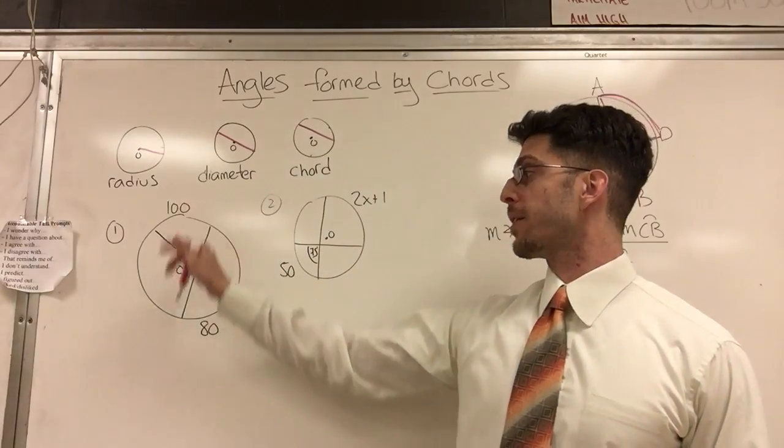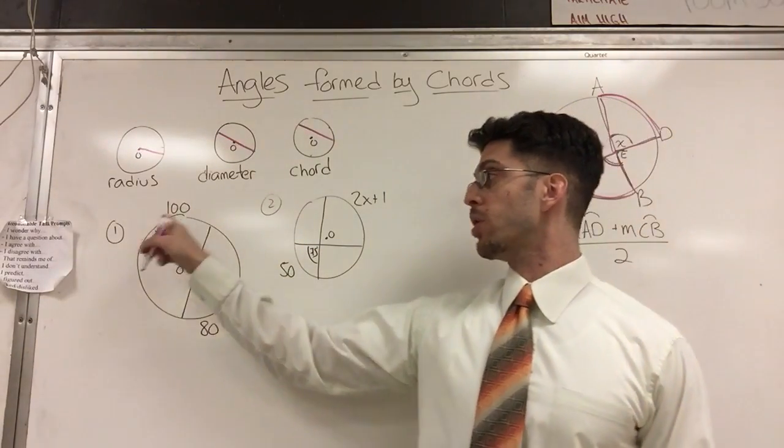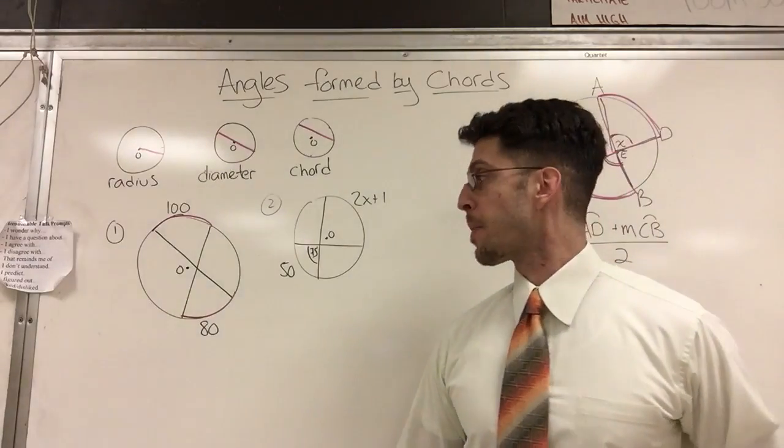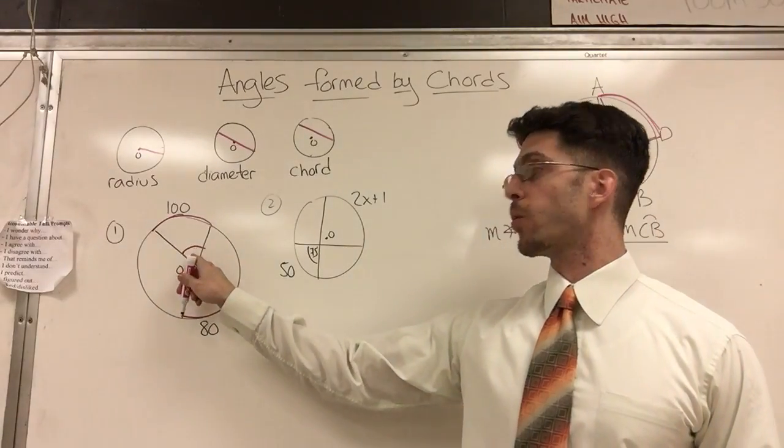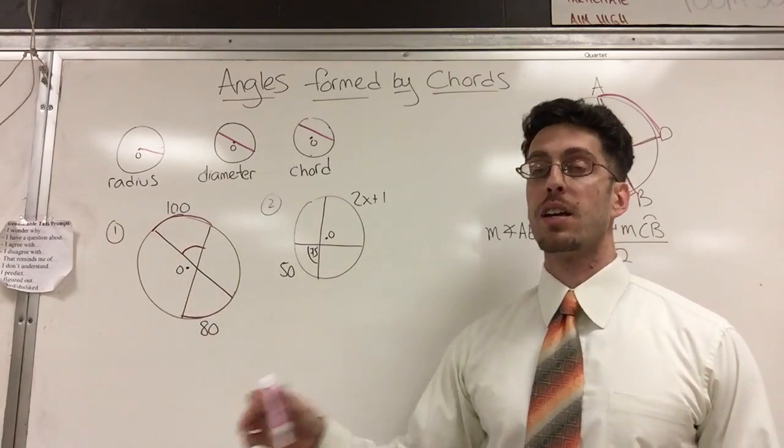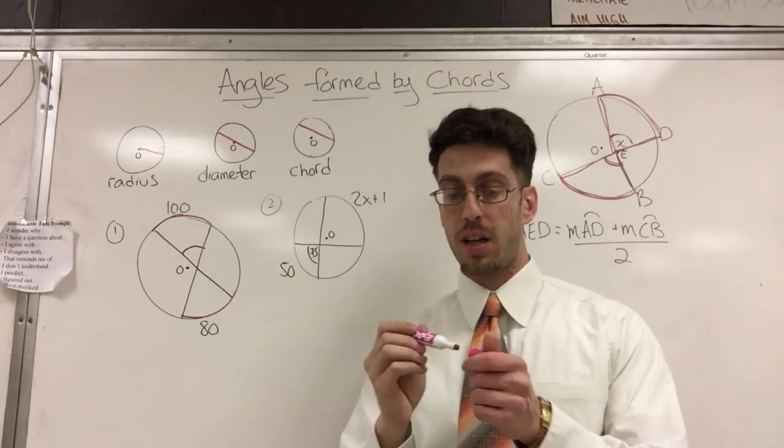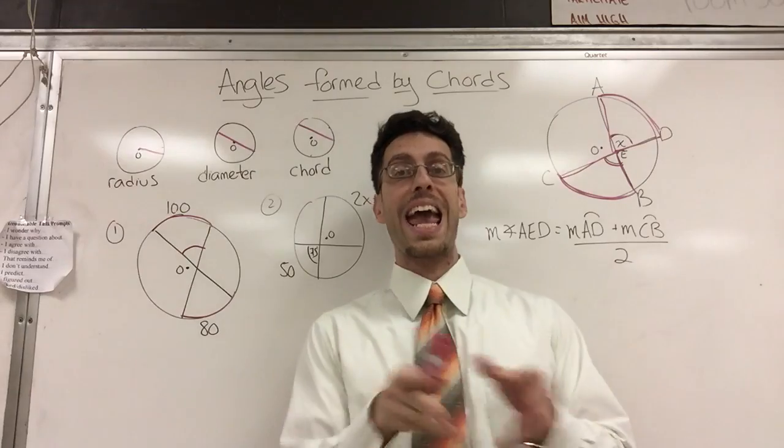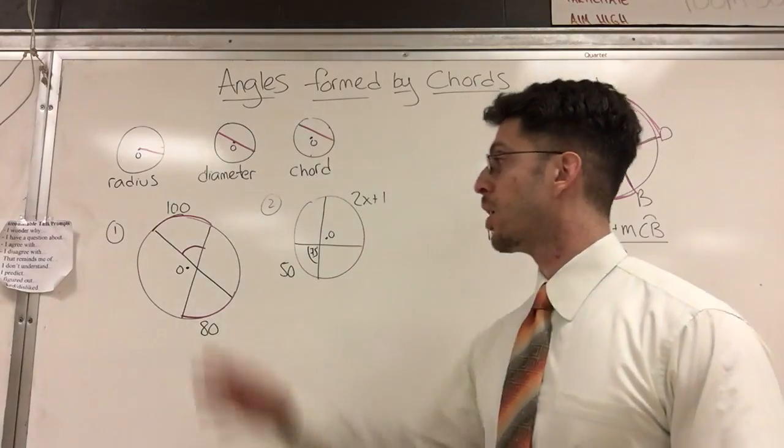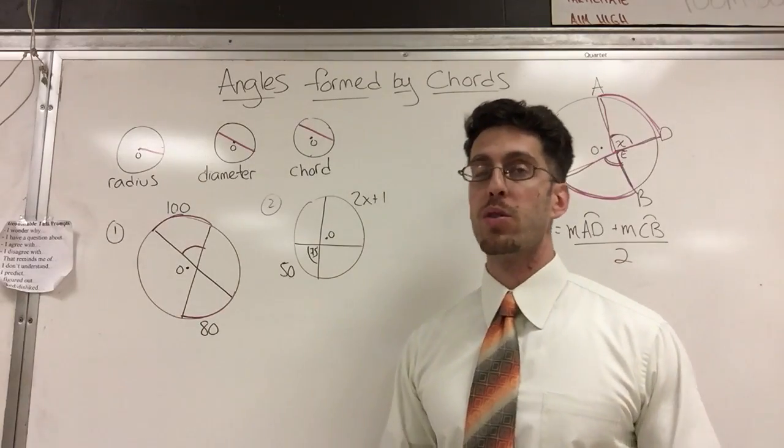So take a look here. I got a circle. This arc is 100. This arc is 80. And I'm going to ask you a simple question: what is the measure of this angle here? It's not 100, not 80. It's the average of 180. So 100 and 80. So I'm going to use a simple formula here. Oh no, he didn't label the arcs, what do I do?